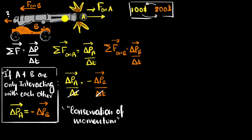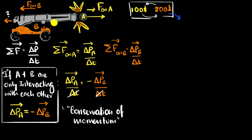That's what's happening over here. Because these two objects are only interacting with each other, whatever momentum one gains, the other one must be losing — they're exchanging momentum. Therefore, the total momentum that they have stays the same. But you can also appreciate why this condition is important. If we start exchanging money with a third person, then the total money that you and I have will change. That's the reason why this only works as long as the two objects are only exchanging forces with each other. If there are unbalanced forces from outside the system, then the momentum of this system will not be conserved anymore.